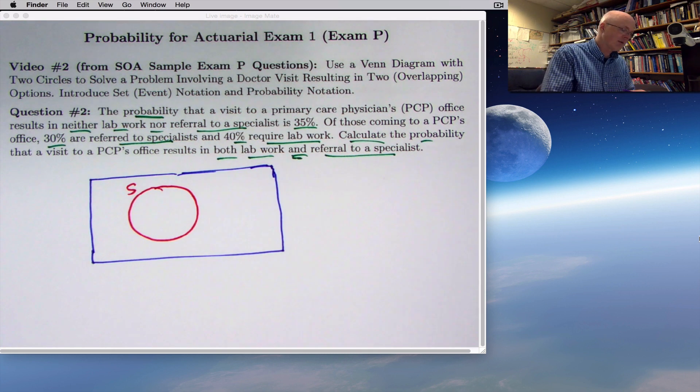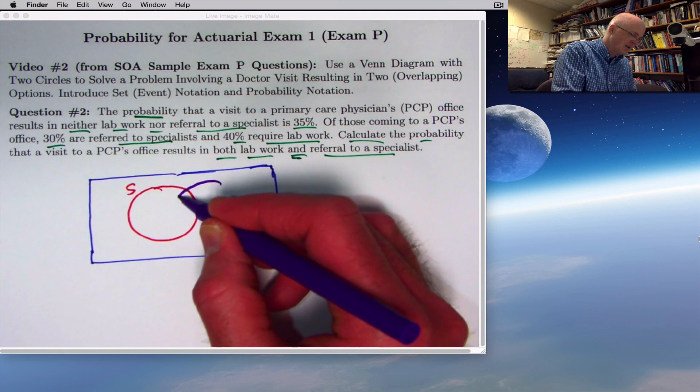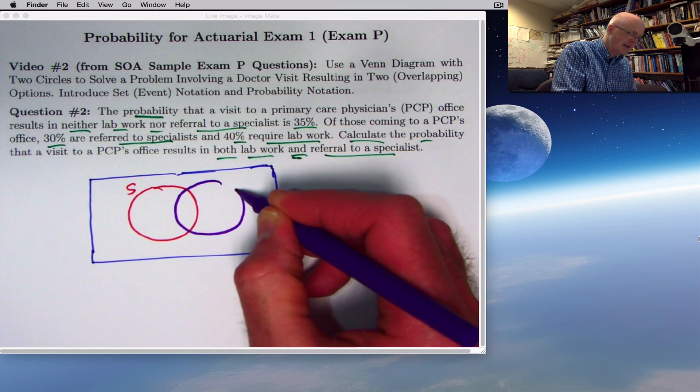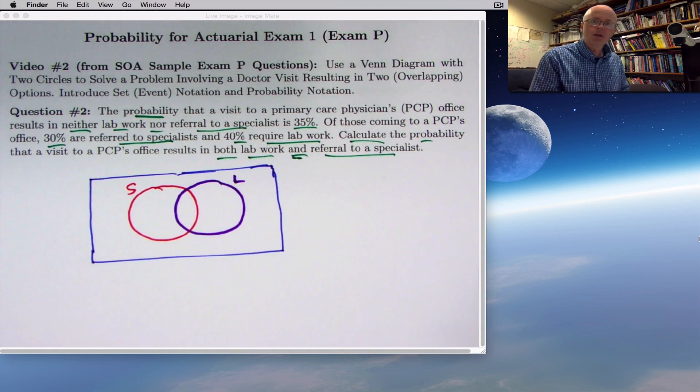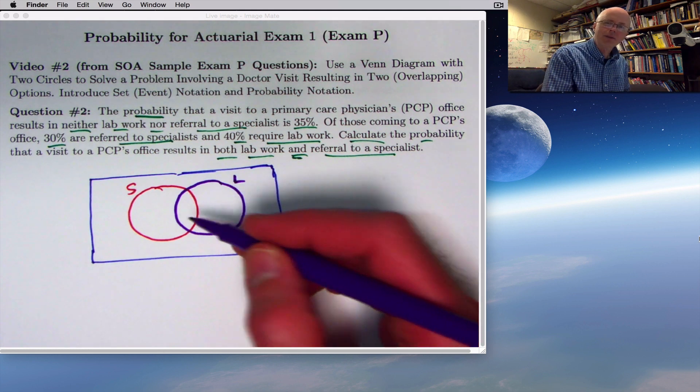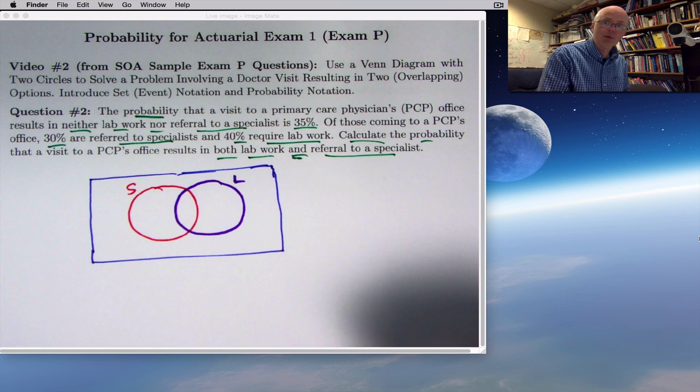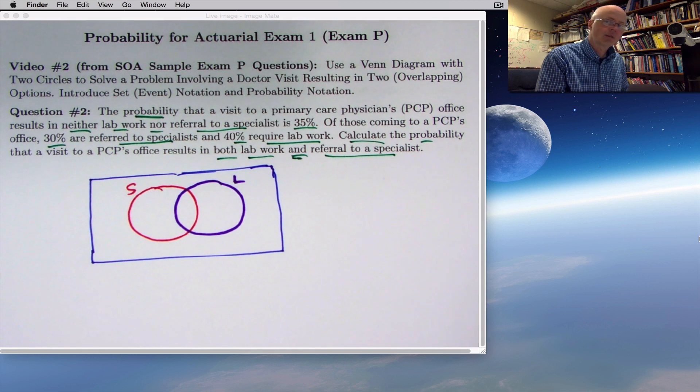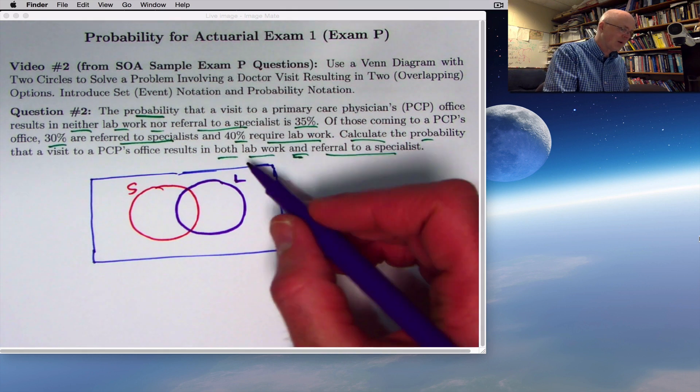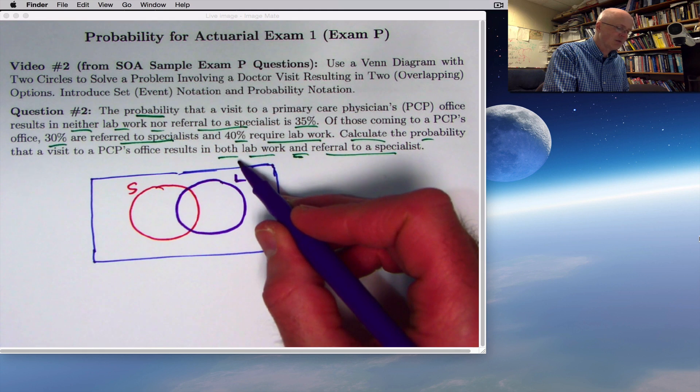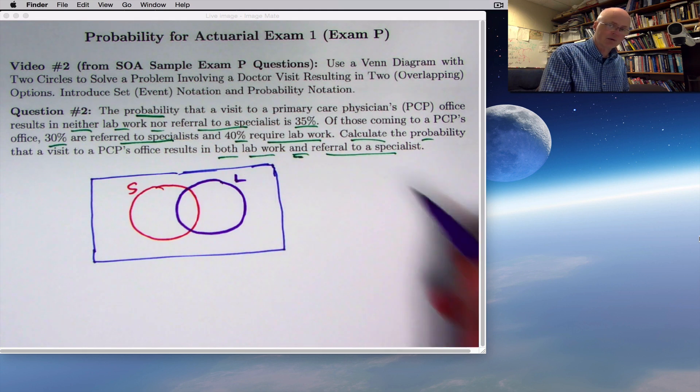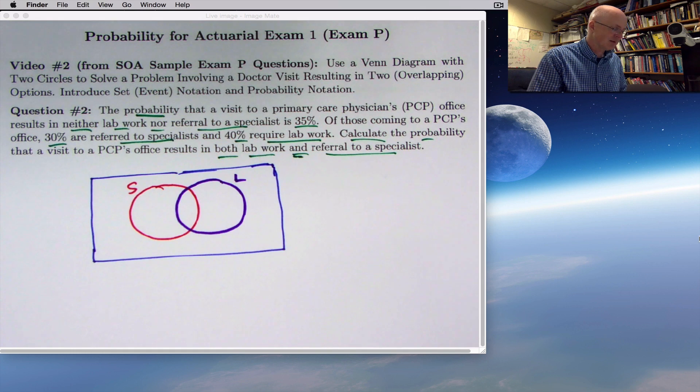Another circle that overlaps is where people have to stand if they've had lab work done. What they have in common, their intersection, would be people who've had both lab work done and were referred to a specialist. The percentage of people that stand in there is the answer to the question. What is the probability that a randomly chosen person will have both? That's the people inside both of these.